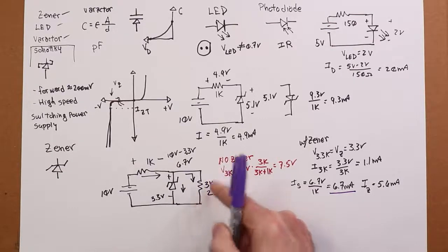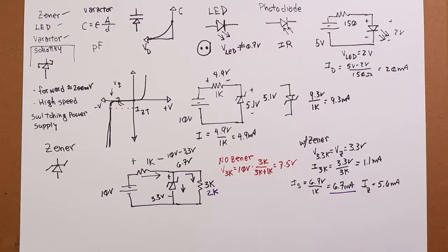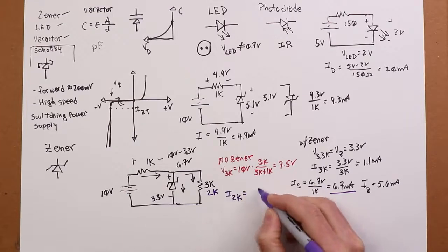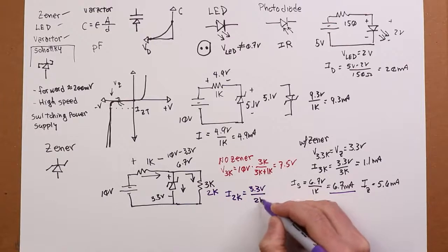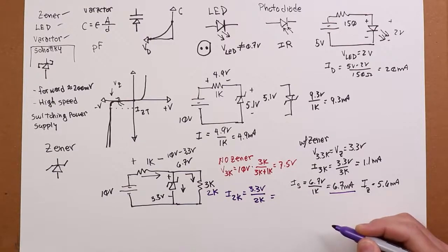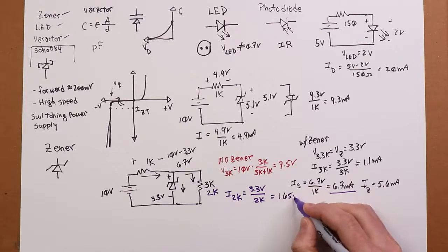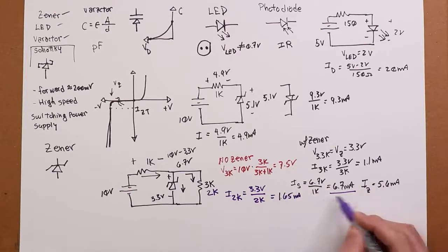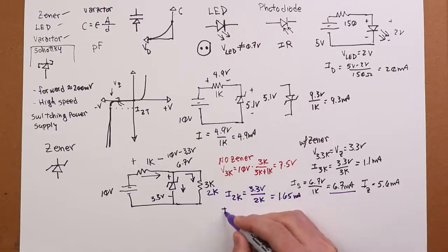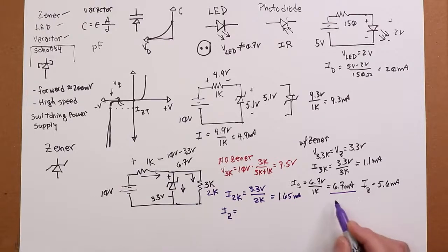Well, what happens to our load current, our 2k current? So the current through the 2k is just going to be 3.3 volts, because it's in parallel over 2k. So that's going to work out to 1.65 mils. Well, you still have the 6.7. So the Zener current is going to be the difference. In other words, 6.7 minus 1.65, which is 5.05.